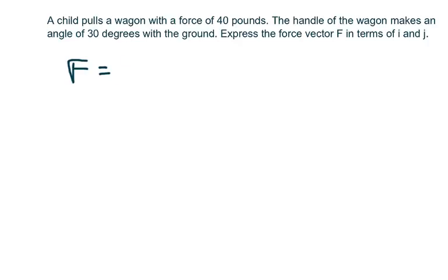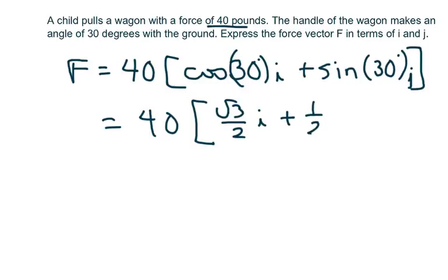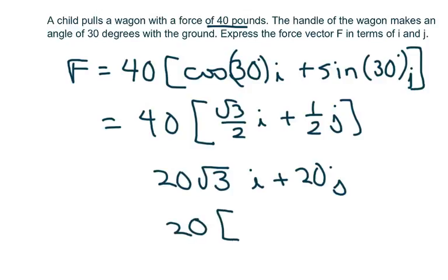So this is your magnitude times your direction, which is cosine of 30 degrees i plus sine of 30 degrees j, which equals 40 times square root of 3 over 2 i plus 1 half j. And when you simplify that, we're going to get 20 square root of 3 i plus 20 j. Or if you want, we can just pull out the 20, and that's going to be square root of 3 i plus j.